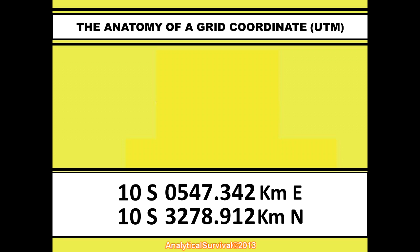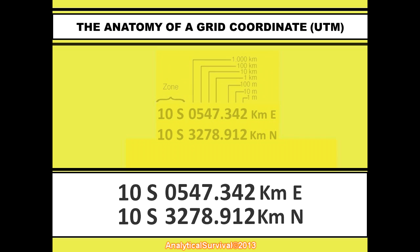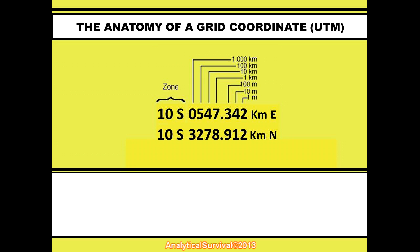Now before we simplify things, let me make perfectly clear that the place value abbreviations I'm about to show you hold true for large-scale maps such as a 7.5-minute, 1-to-24,000 scale map — by far the US Geological Survey's most common map. However, these conversions will not hold true for smaller-scale maps, which can be in scales of 1-to-100,000 for instance. I just wanted to establish that before we get calculating.